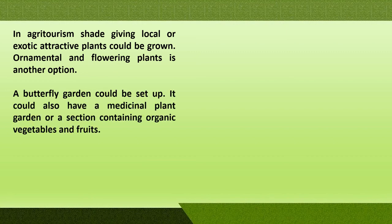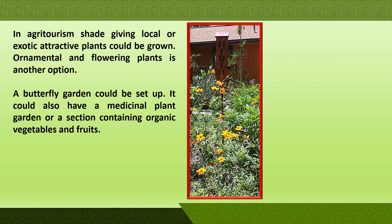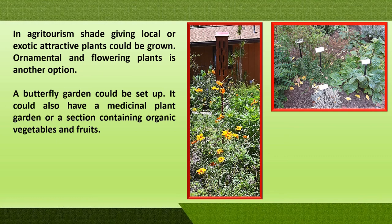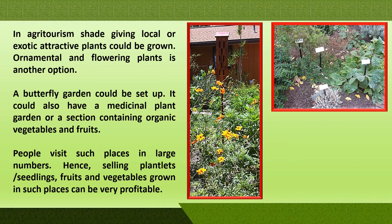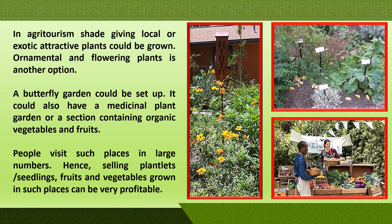A butterfly garden could be set up in such agritourism places. A medicinal plants garden section containing organic vegetables and fruits could also be included. When people visit, they want to buy things, so the agritourism operators can sell small plantlets, seedlings, and the fruits and vegetables grown there, making agritourism an important occupation that generates significant income.